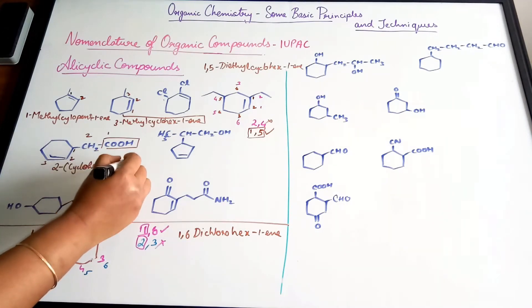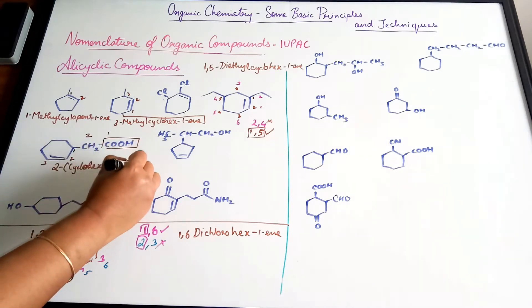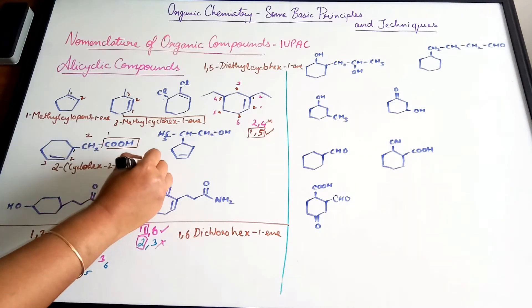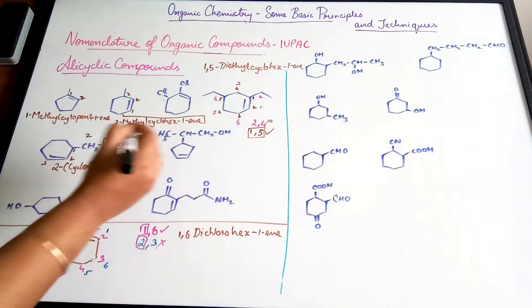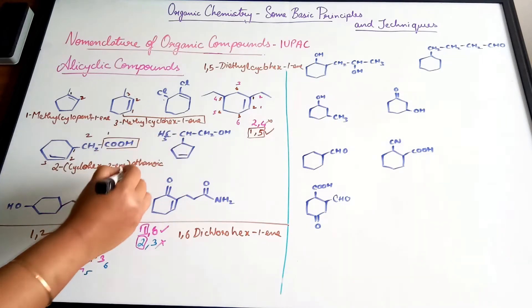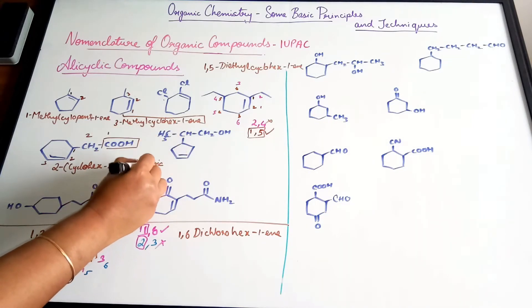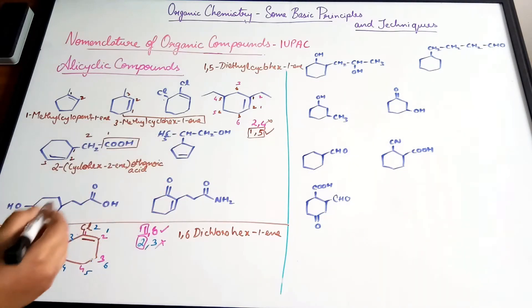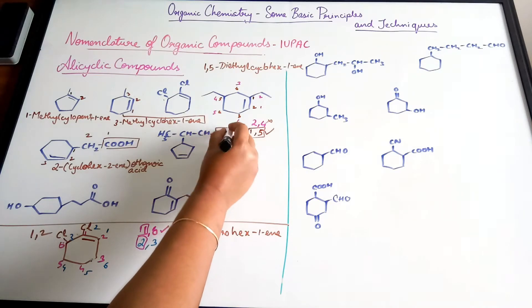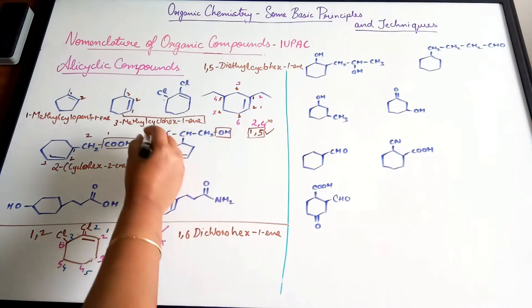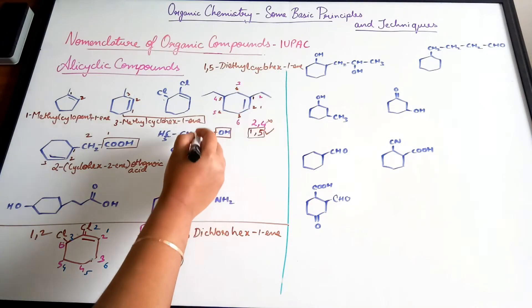At the second carbon we have a cyclohexene substituent, so the compound is named (cyclohexen-1-yl)ethanoic acid.